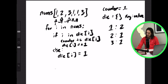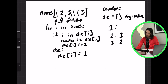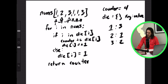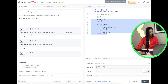We move to the last position, which is 3. We've seen 3 once before in the dictionary, so we add 1 to the counter, giving us counter = 4. Then we increment dictionary[3] to 2. We've gone through the entire array, so we exit the loop and return our counter, which is 4. If we look at the expected output, it's also 4.